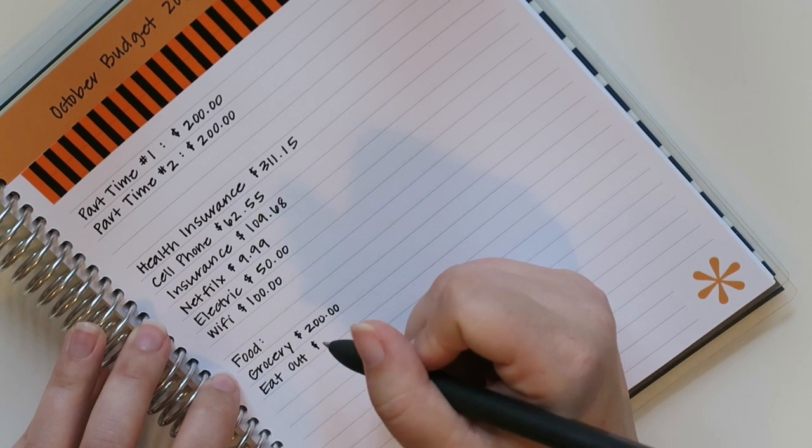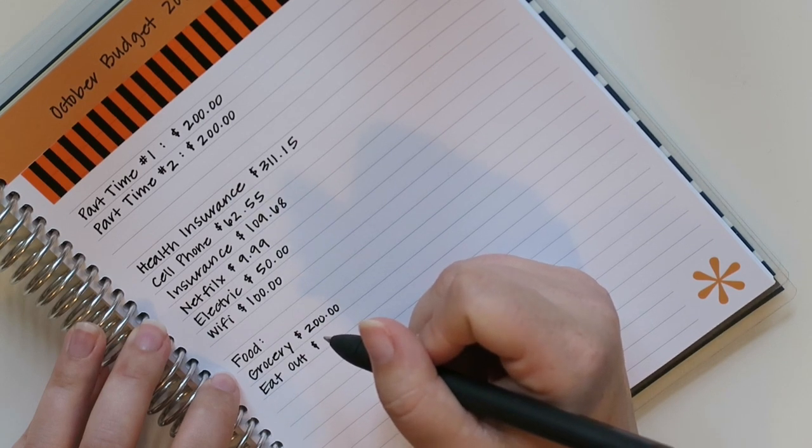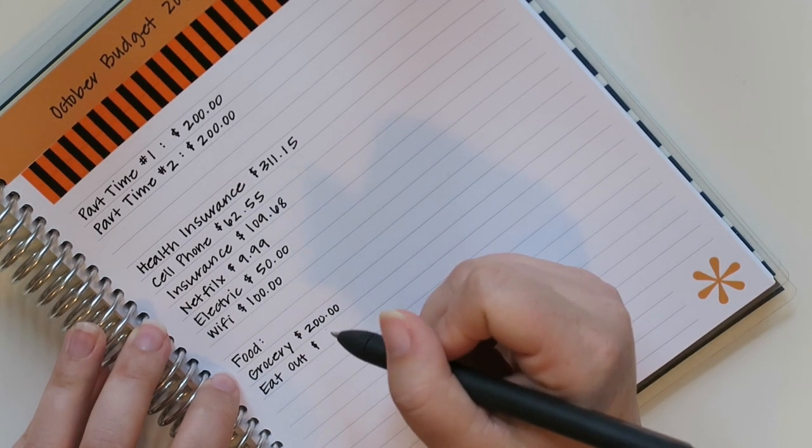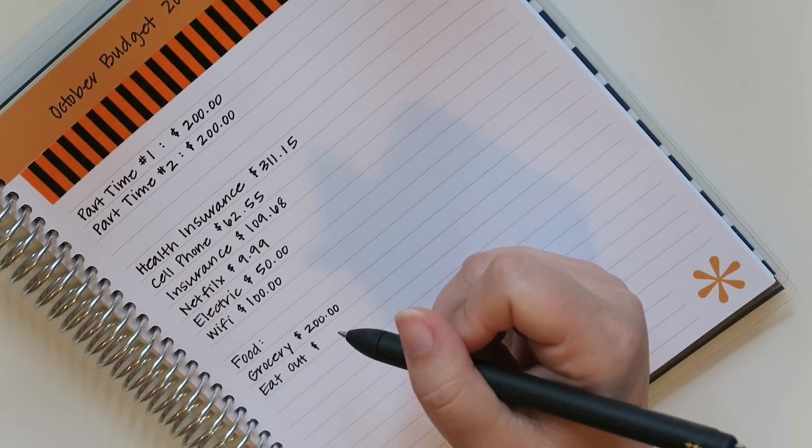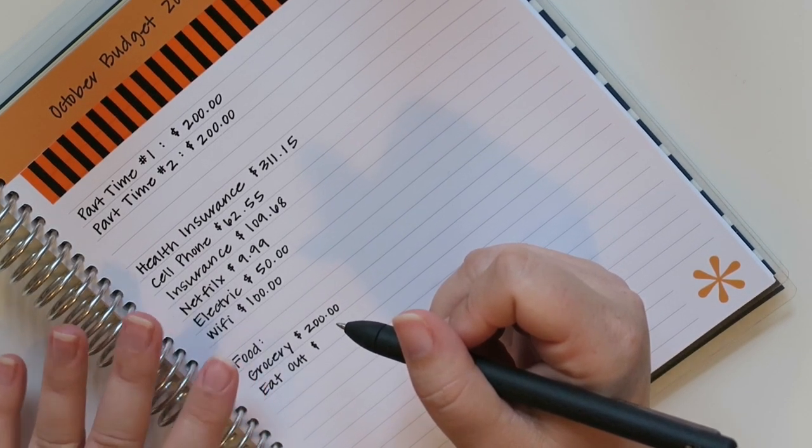And then every week I'll go, but I'll get like bananas and fruit and veggies, like the fresh stuff and sometimes bread, but I'm not really a big like bread eater. So I feel like $200 is just fine for me.